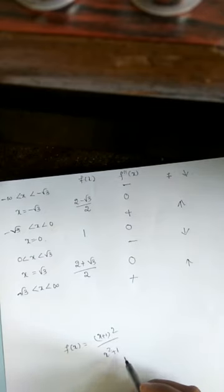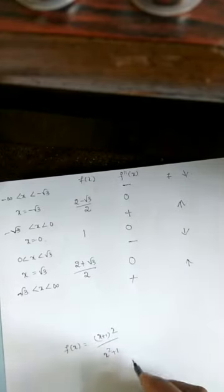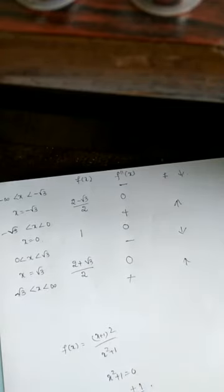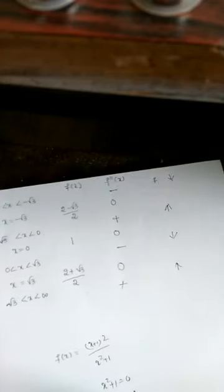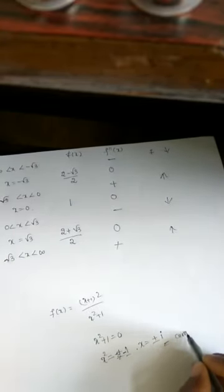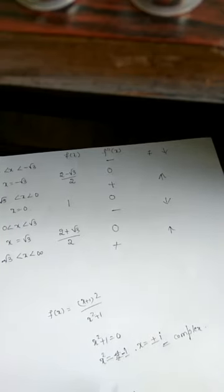Step 8 — vertical asymptotes: set denominator x²+1 = 0, giving x² = −1, so x = ±i, which is complex. Therefore, the given function has no vertical asymptote.